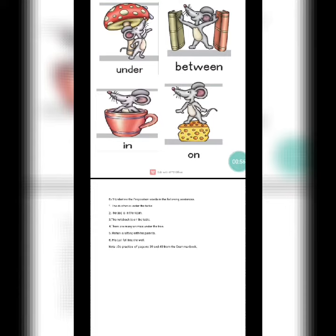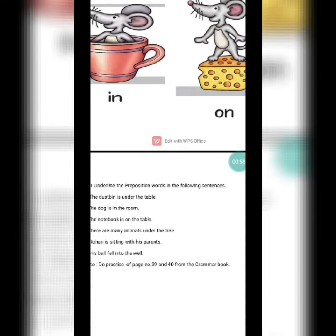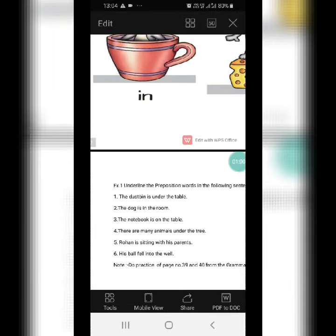First one is, underline the preposition words in the following sentences. The dustbin is under the table, so the preposition is under. The dog is in the room, so the preposition is in.